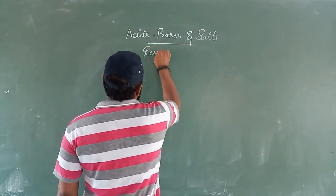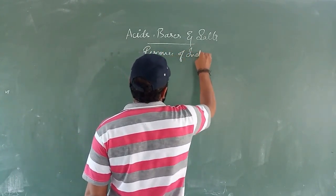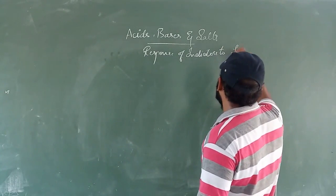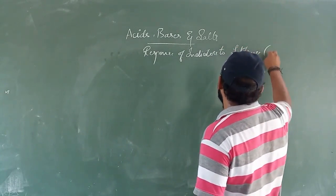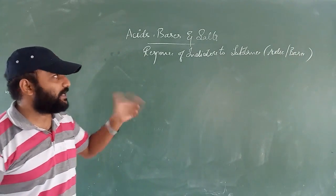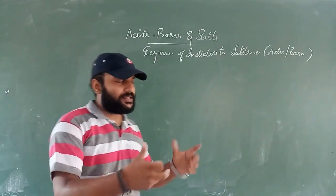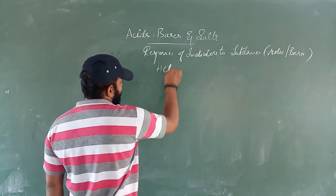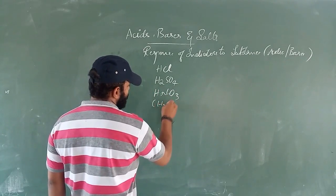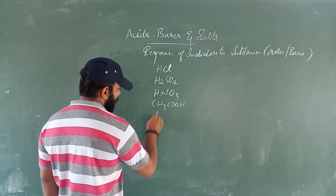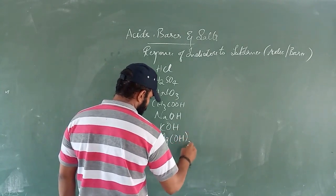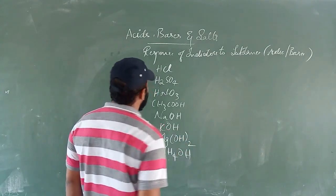Now let us look at the response of indicators to acidic or basic substances. We will consider the following chemicals: HCl, H₂SO₄, HNO₃, CH₃COOH as acids, and NaOH, KOH, Mg(OH)₂, and NH₄OH as bases, since they contain H⁺ ions and OH⁻ ions respectively.